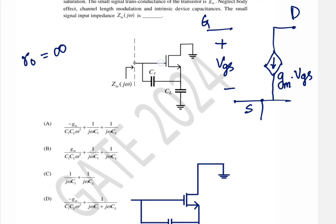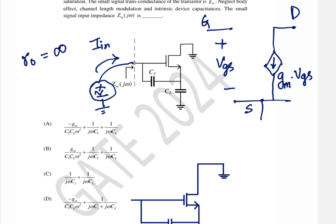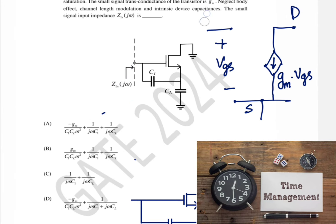There are some intrinsic device capacitances — from gate to source there will be a capacitance, and from gate to drain there will be a capacitance — but they are being ignored here. The question asks: what will be the small signal input impedance Z_in? That is, if you apply an AC voltage v_in and a current i_in flows, find Z_in = v_in / i_in.